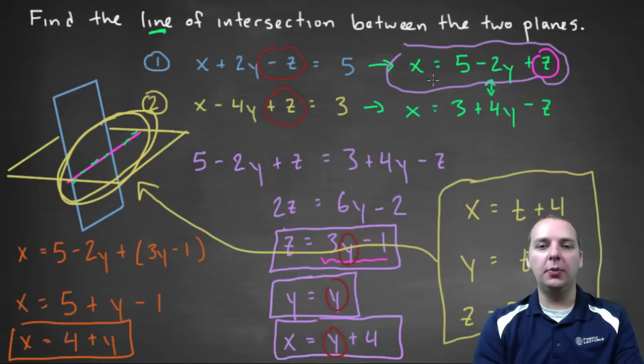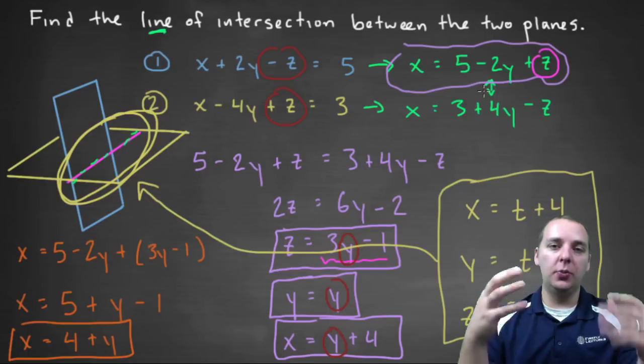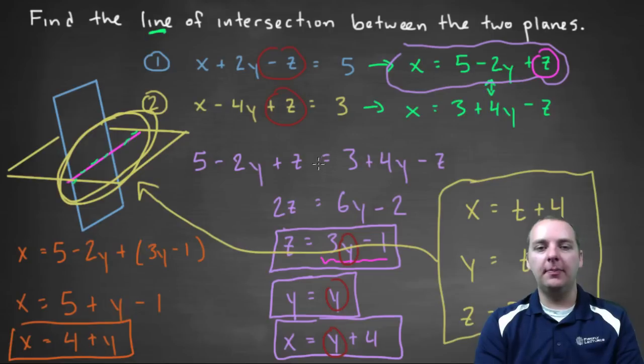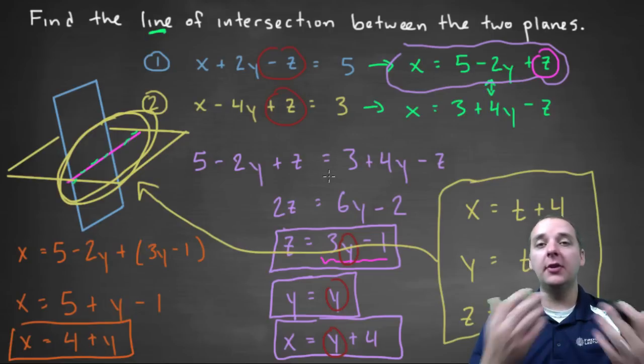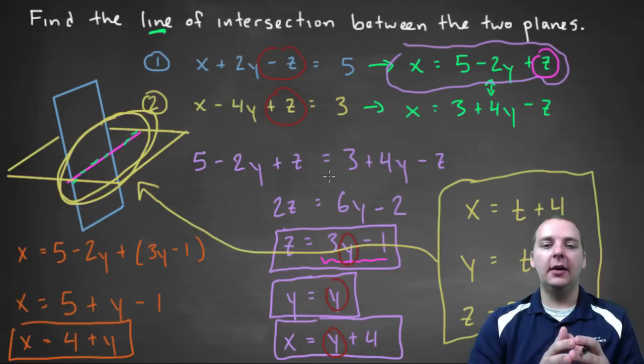But solve for one of the variables, then set those equations equal to each other, the right hand sides, and you'll reduce the number of variables down. And then keep going until the x and the y and the z are all in terms of some variable. Our example is y, maybe your example it'll be z, or what have you. And then once they're all written in terms of the same variable, change that variable on the right hand side to a t, and you're done. That'll be a set of three parametric equations that represents your line in space.